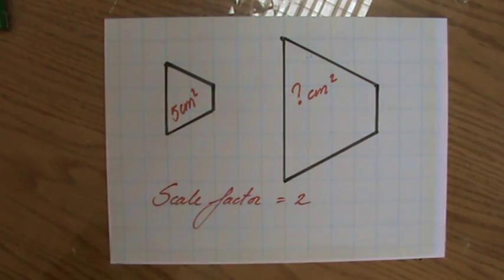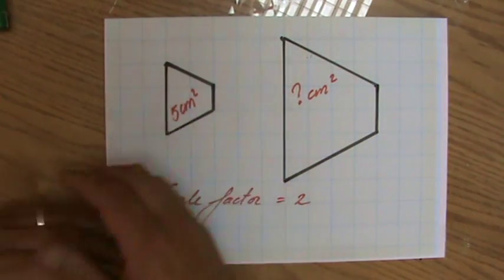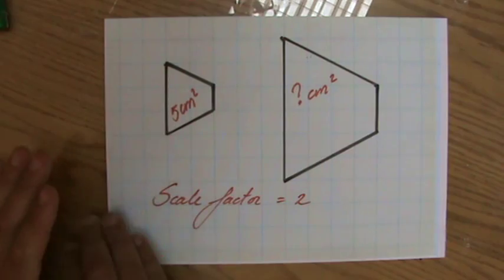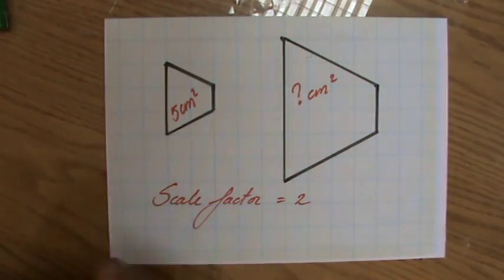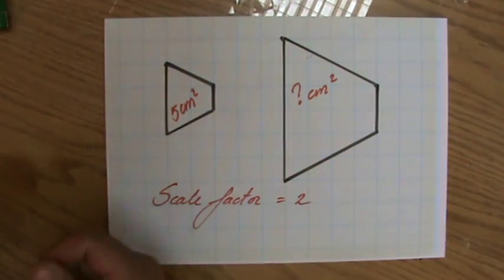So we're looking now at area. It's just a sketch. I have a trapezium with an area of 5 cm squared and with a scale factor of 2, the question now is what is the area of the bigger trapezium? And of course it's going to be more than 5 cm squared because it's bigger.